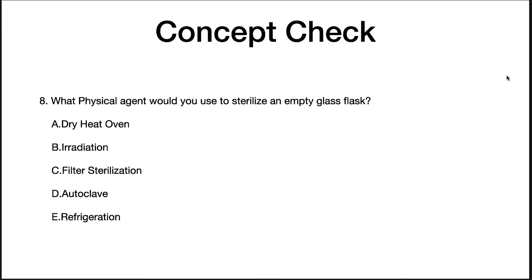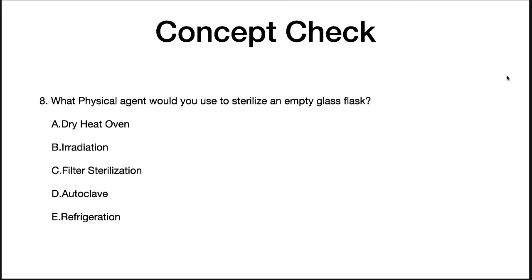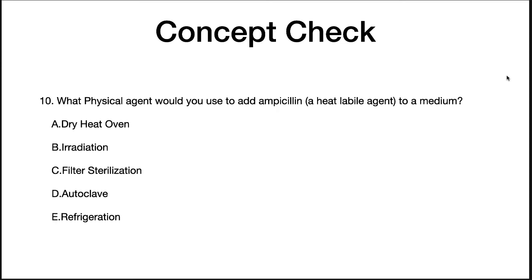One of the best ways to demonstrate mastery of methods of control is to know when to apply them. What physical agent would you use to sterilize an empty glass flask? What physical agent would you use to extend the shelf life of peaches? And what physical agent would you use to add ampicillin, a heat-labile agent, to a medium? The correct answer to the first question is a dry heat oven — you could also use an autoclave, but that would be overkill. To extend the shelf life of peaches, irradiation would be the best option. And for ampicillin, you would use filter sterilization.